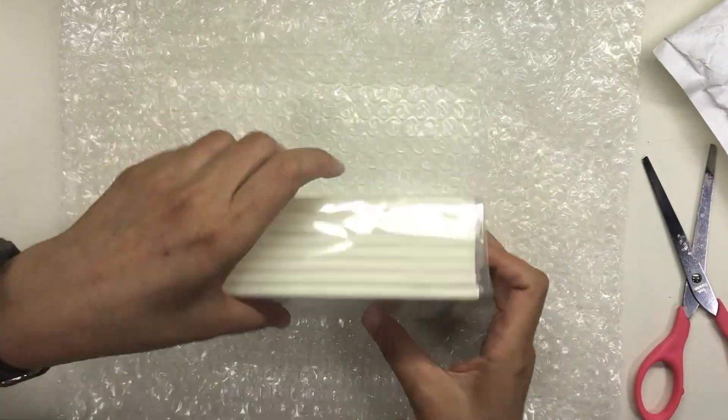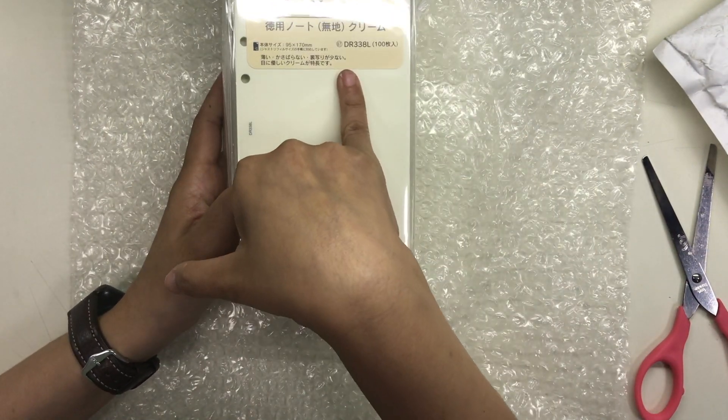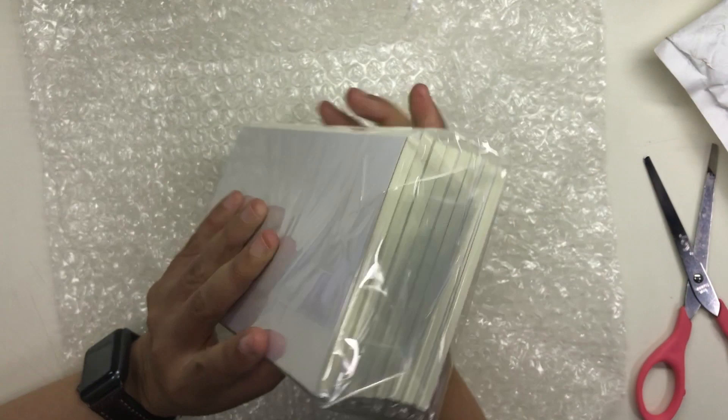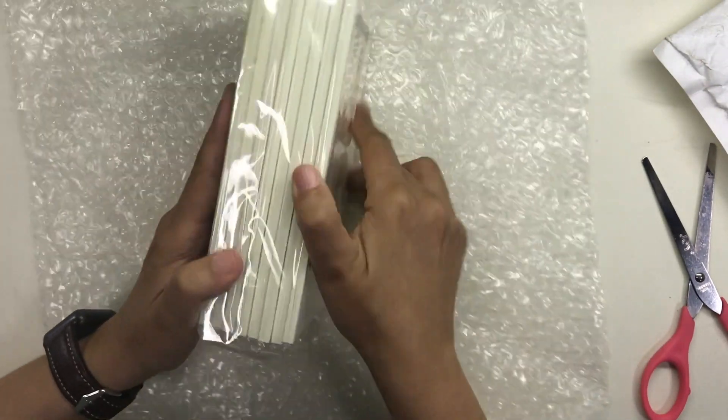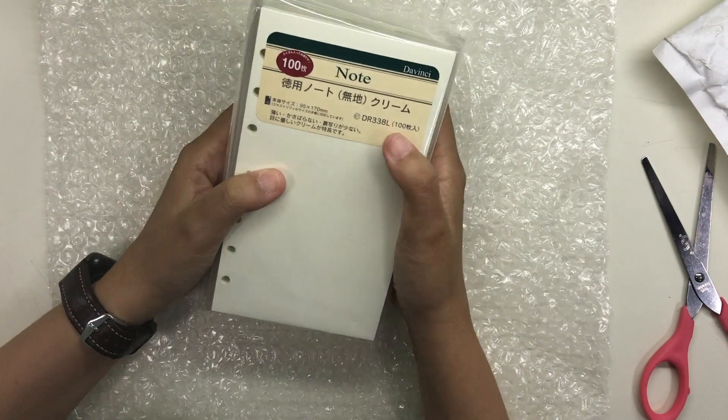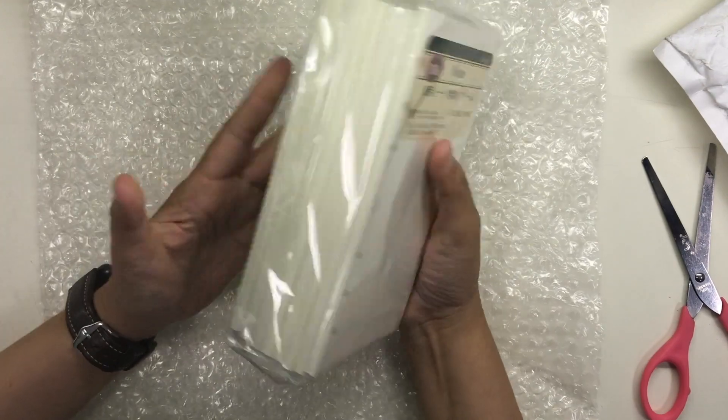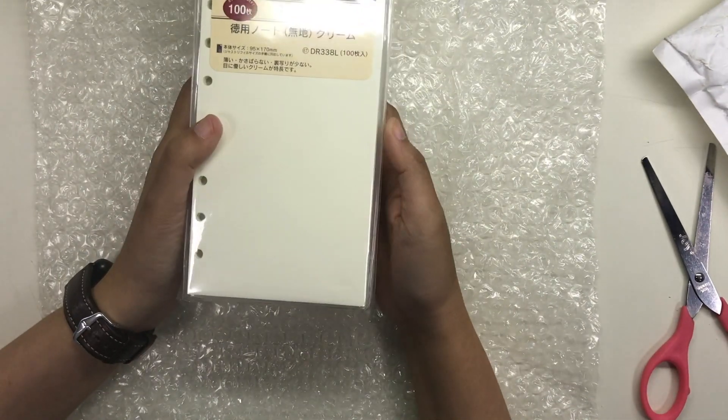So now I have eight packs of these. These are labeled the DR-338L but I don't really know what to use them for right now. I will hold on to them though. I know that somewhere down the line I will find use for them. Having a stash of Tomoe River paper is never ever a waste.